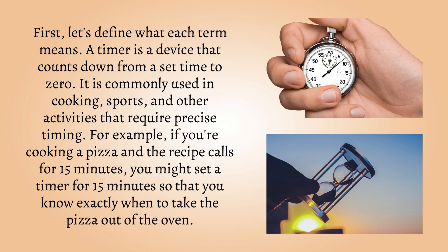First, let's define what each term means. A timer is a device that counts down from a set time to zero. It is commonly used in cooking, sports, and other activities that require precise timing. For example, if you're cooking a pizza and the recipe calls for 15 minutes, you might set a timer for 15 minutes so that you know exactly when to take the pizza out of the oven.